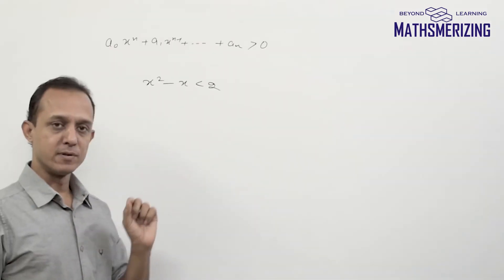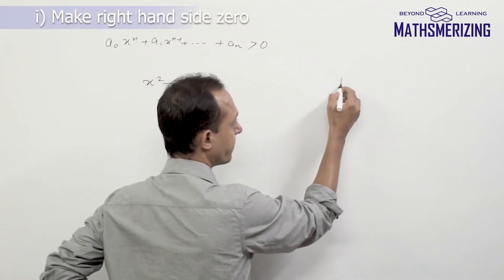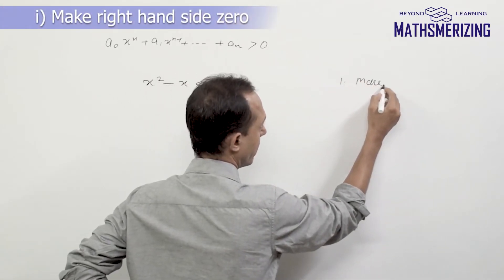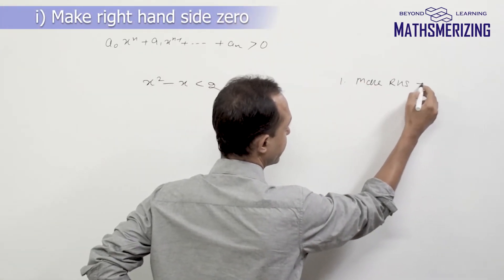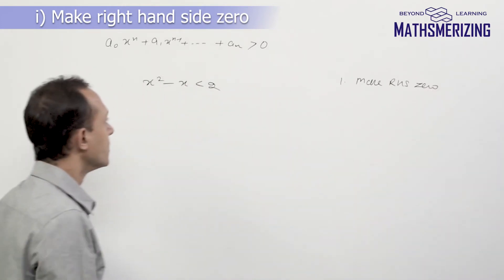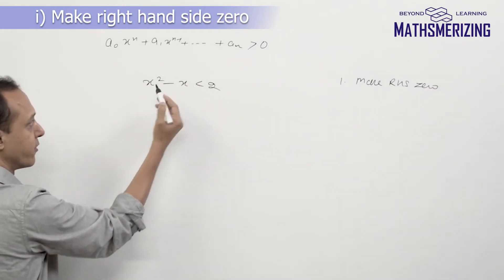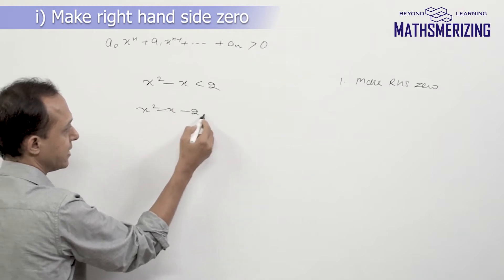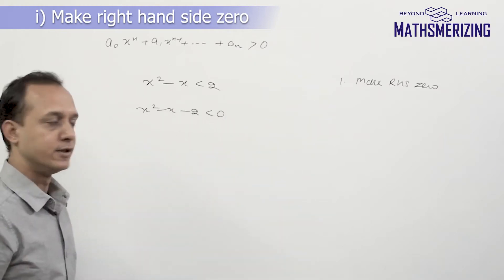There are certain steps in this algorithm. The first step is make the right hand side zero. So whatever is there on the right hand side, just take it to the left hand side. So I'll get x² - x - 2 and this is less than 0.